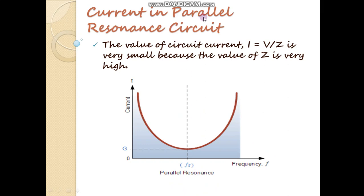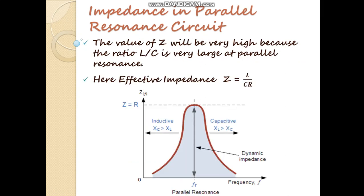Now we will see the current in the parallel resonance circuit. Looking at this graph of current versus frequency, at the point F equals FR the current is very minimum. The value of circuit current I equals V by Z is very small because the value of Z is very high in the parallel resonance circuit. The impedance is maximum at resonance because the ratio L by CR is very large, and the effective impedance can be given as Z equals L by CR. So in the parallel resonance circuit the impedance is maximum and current is minimum.